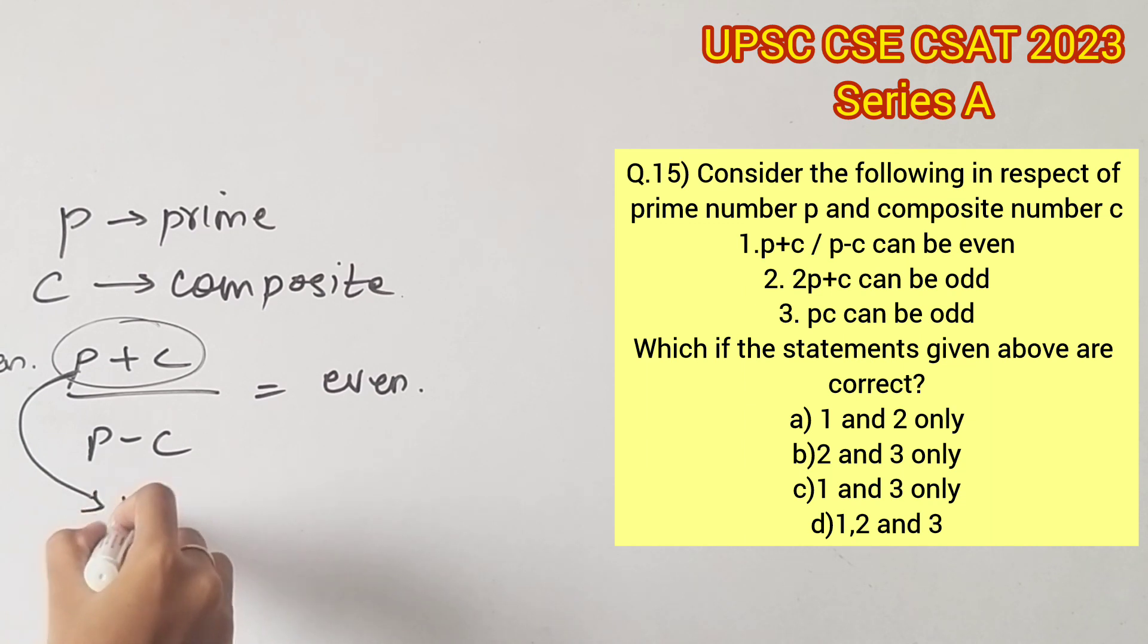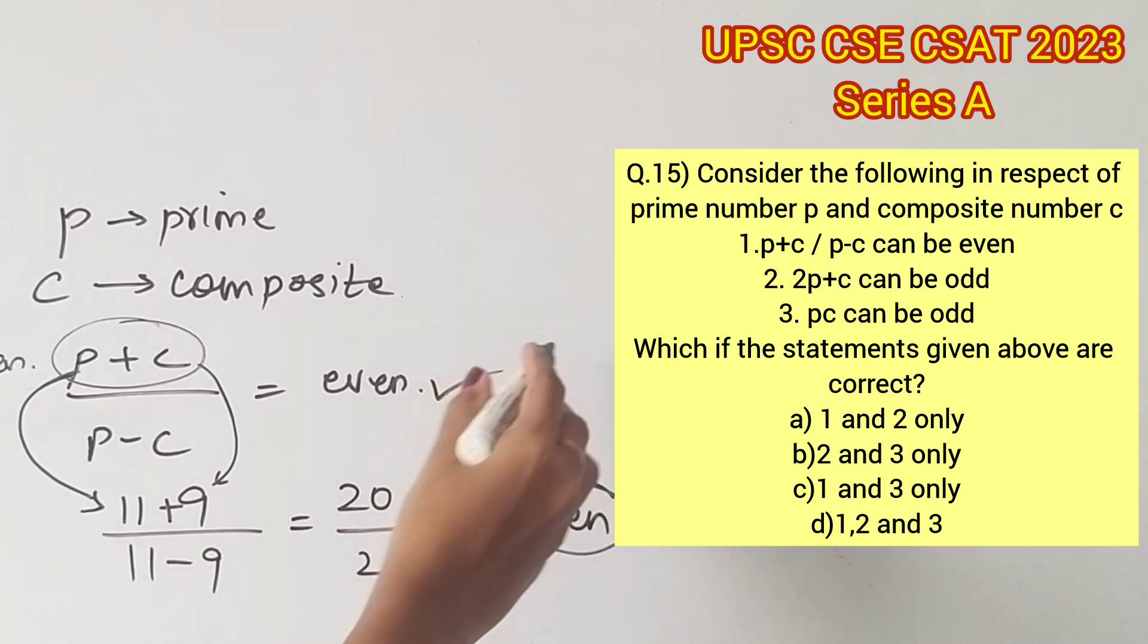Considering 11 in the place of p which is a prime number and 9 in the place of c which is a composite number, adding 11 plus 9 and dividing by 11 minus 9 will give us 20 by 2 which is 10, an even number.